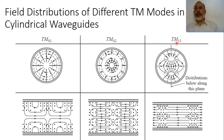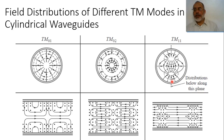For the TM11 mode, there is one variation in the phi direction and one variation in the rho direction. In the rho direction, the electric field points in one direction, then reverses to the opposite direction.